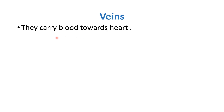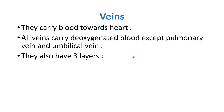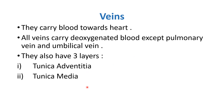The second type of blood vessels are veins. Veins carry blood towards the heart. All veins carry deoxygenated blood, with two exceptions: the pulmonary vein and the umbilical vein. Veins also have three layers — like arteries: tunica adventitia (outermost), tunica media (middle), and tunica intima (innermost).